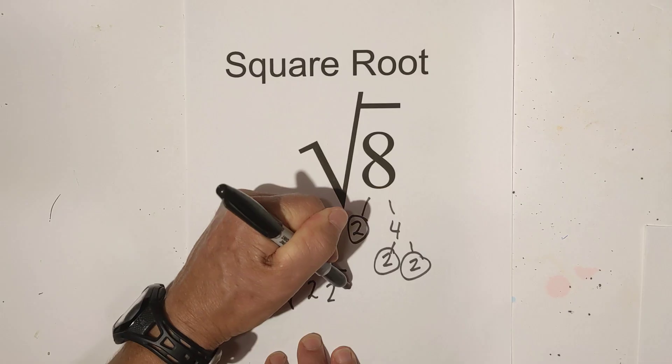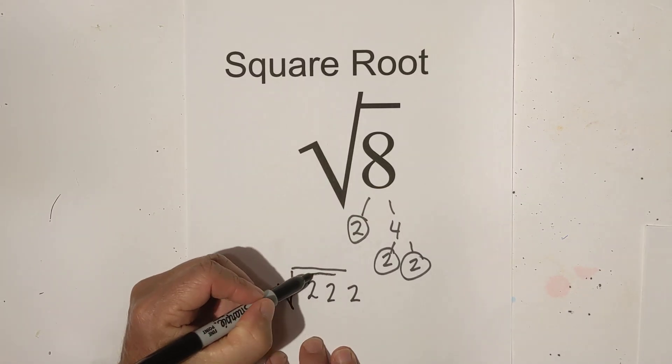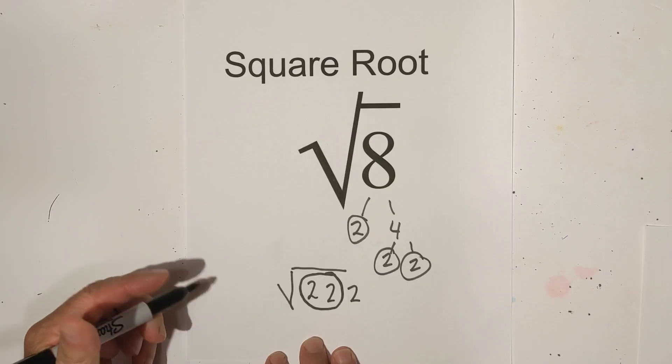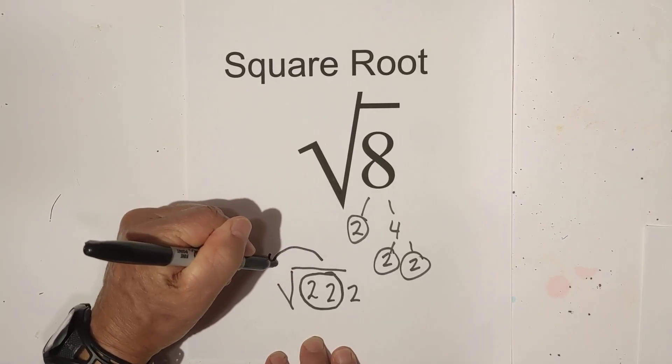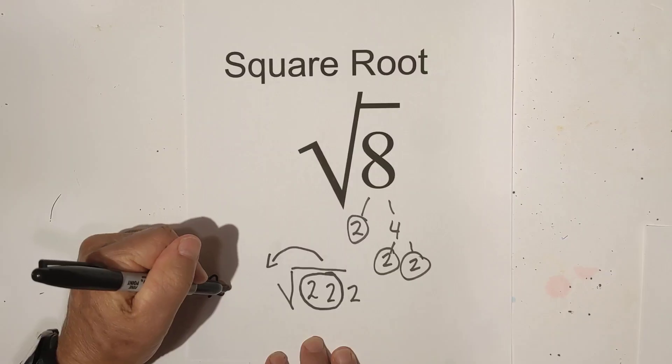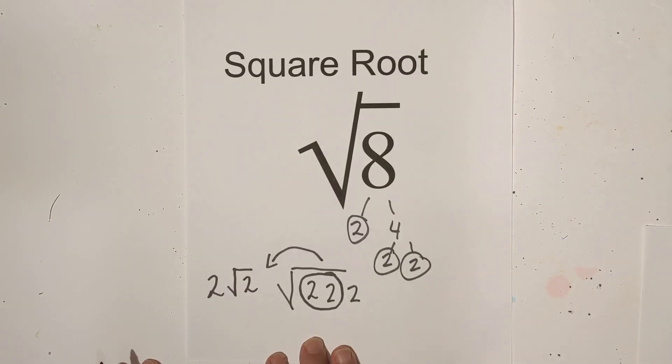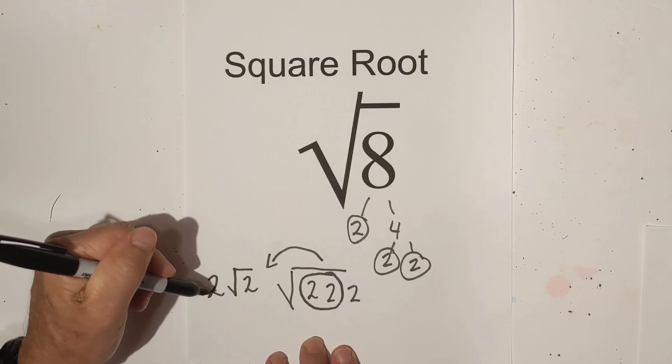I'm going to write all three 2s, and you know that since it is a square root, you can pull out pairs. So I can pull out one pair. I'm going to rewrite this over here. So I have 2, but I still have one under the sign. And so simplified, it is 2√2.